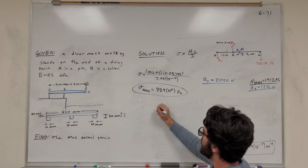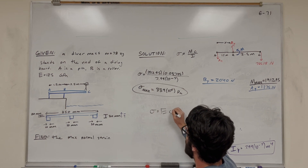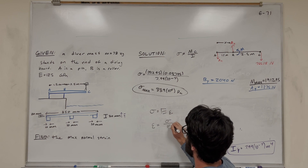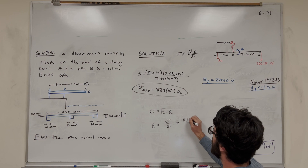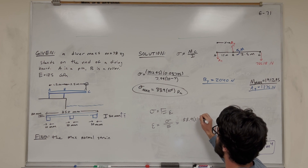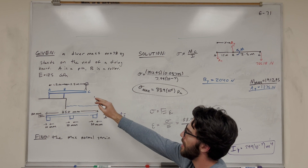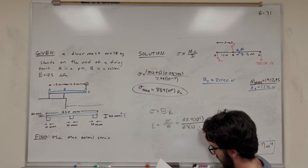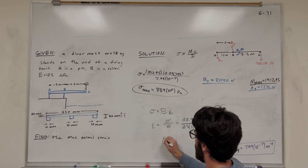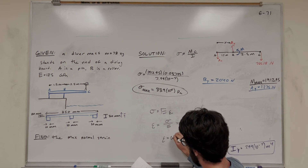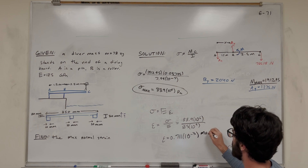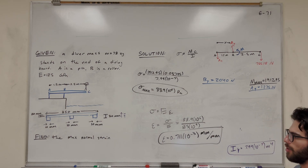We know that stress equals the modulus of elasticity times strain, so we can find strain by dividing stress by the modulus of elasticity. That's 88.9 × 10⁶ over 125 × 10⁹ gigapascals. We find our strain equals 0.711 × 10⁻³ millimeters per millimeter. And there we go — we found our normal strain.